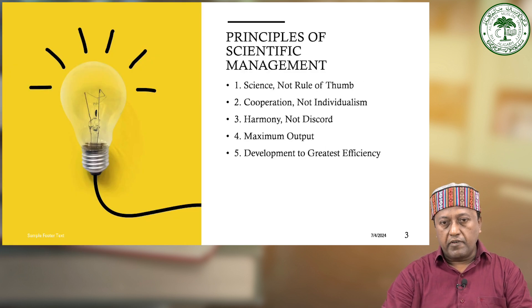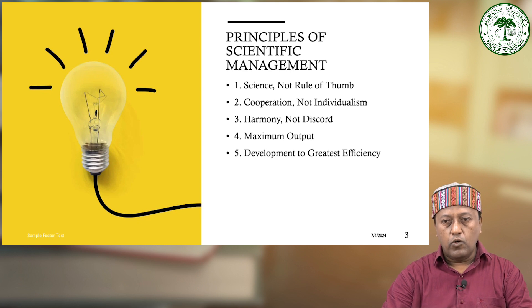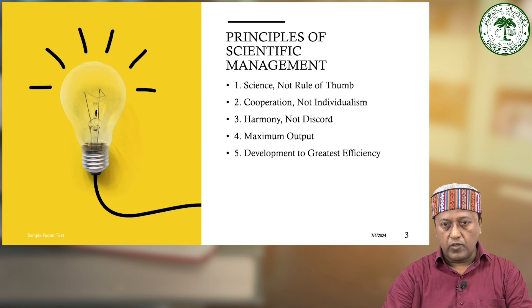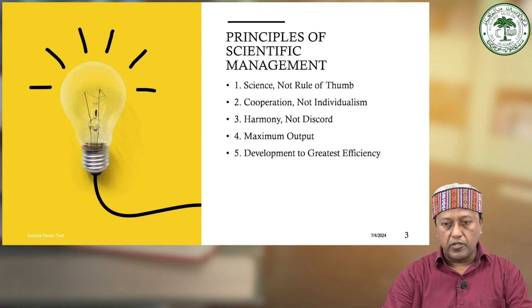Taylor's principles of scientific management revolutionized how organizations approached work and productivity, aiming to optimize efficiency through scientific methods. These principles include five basic elements. The first is science, not rule of thumb: Taylor advocates replacing estimation guided by rule of thumb with a more precise, scientific approach to work. Every detail should be accurately measured rather than approximated, and this precision should extend across all aspects of management.